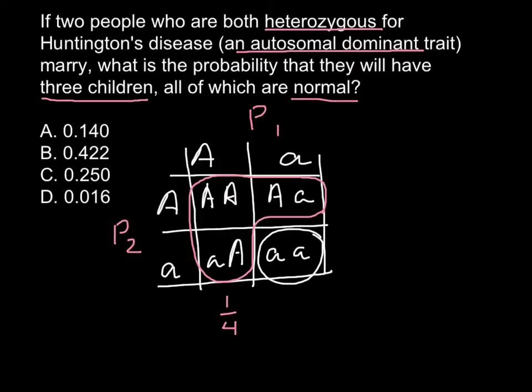So for the first child, as you see, we have chances one of four. For the second child, we also have chances one of four. Because the first child and his health doesn't affect outcomes for the probability for the second child. And third child also have the same probability. So we have now to multiply all these chances. And we are going to get 1 over 64.